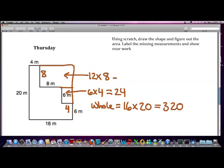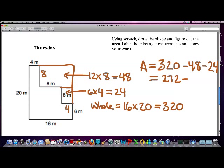6 times 4 is 24, and 12 times 8 is 48. So I get the area is equal to 320 minus 48 minus 24, which is 272 minus 24, which is 248.